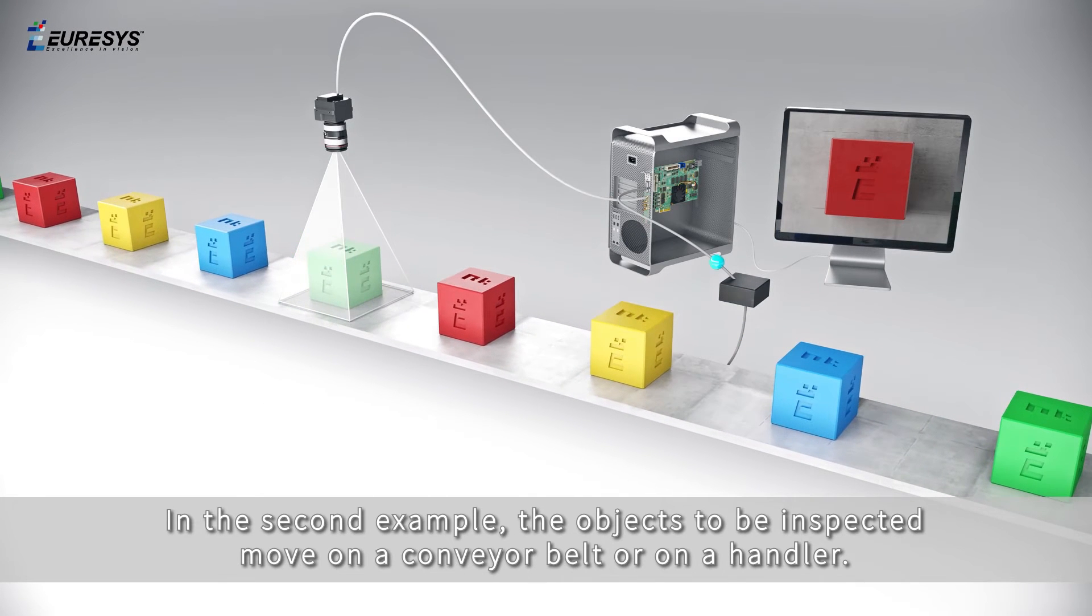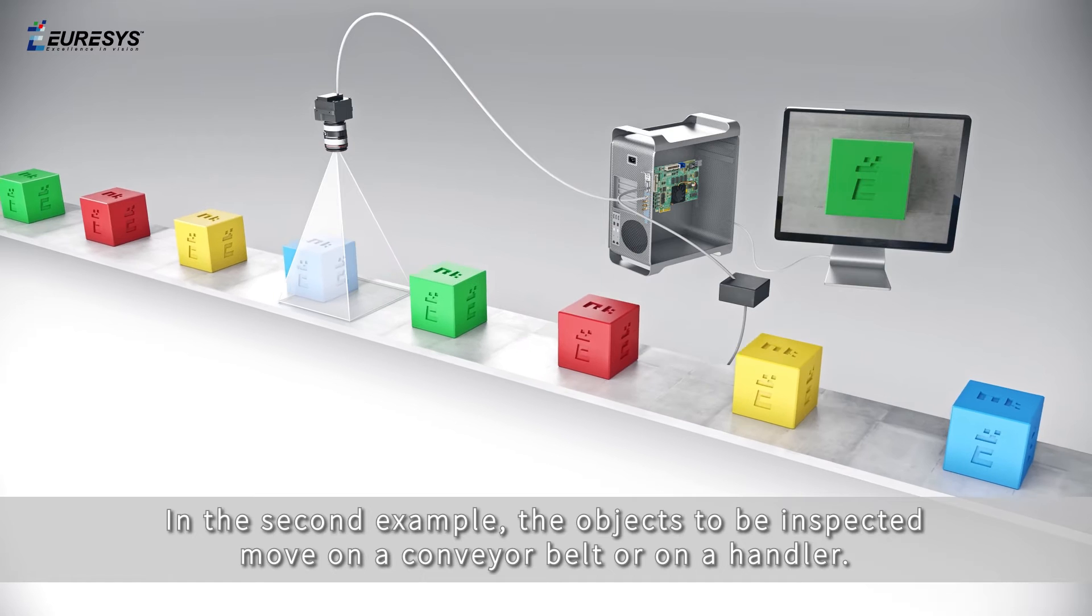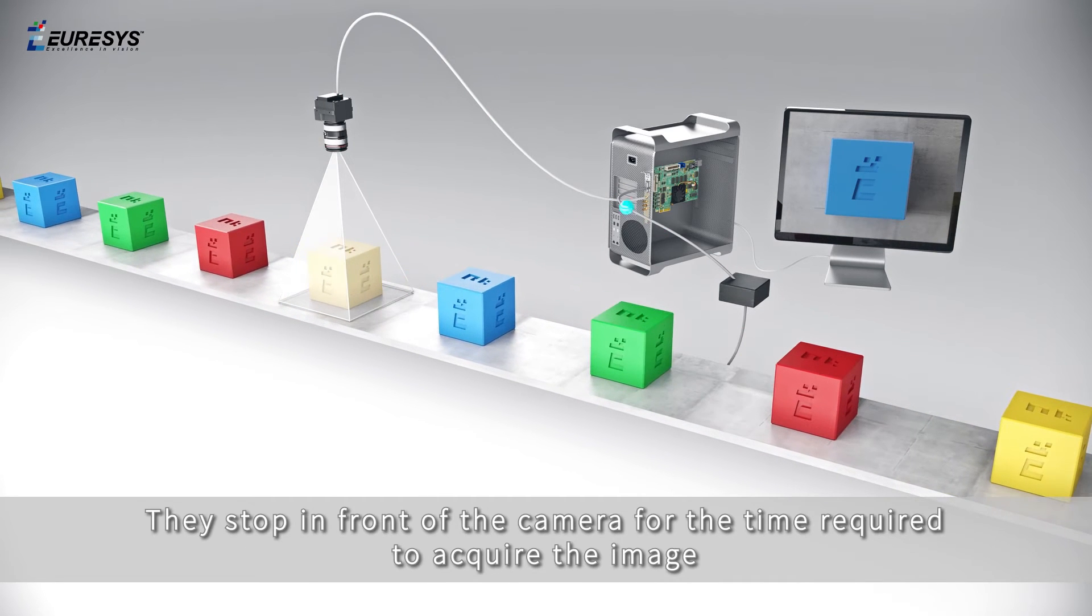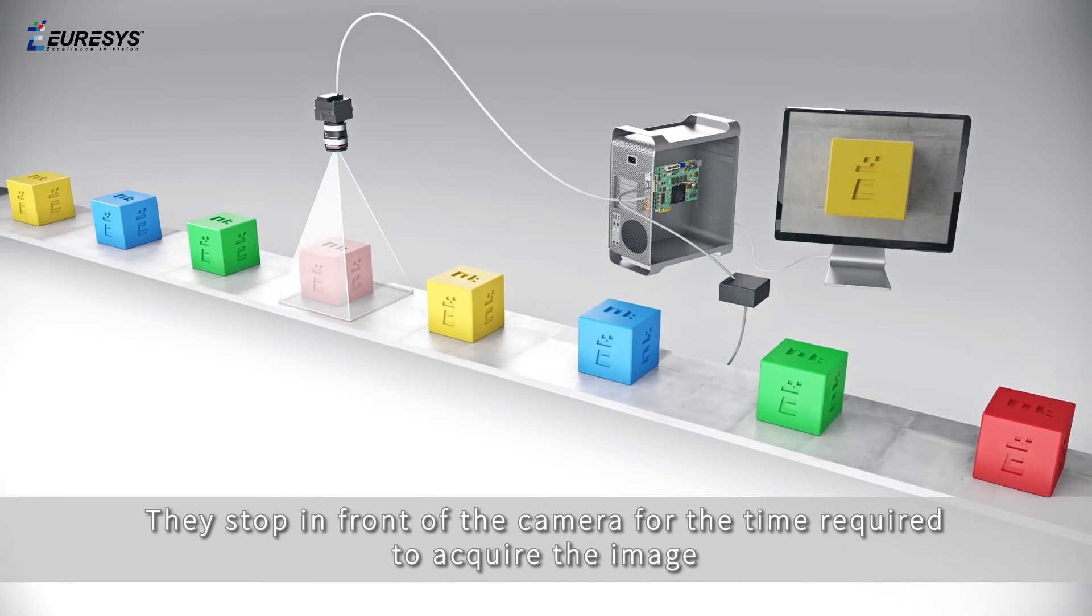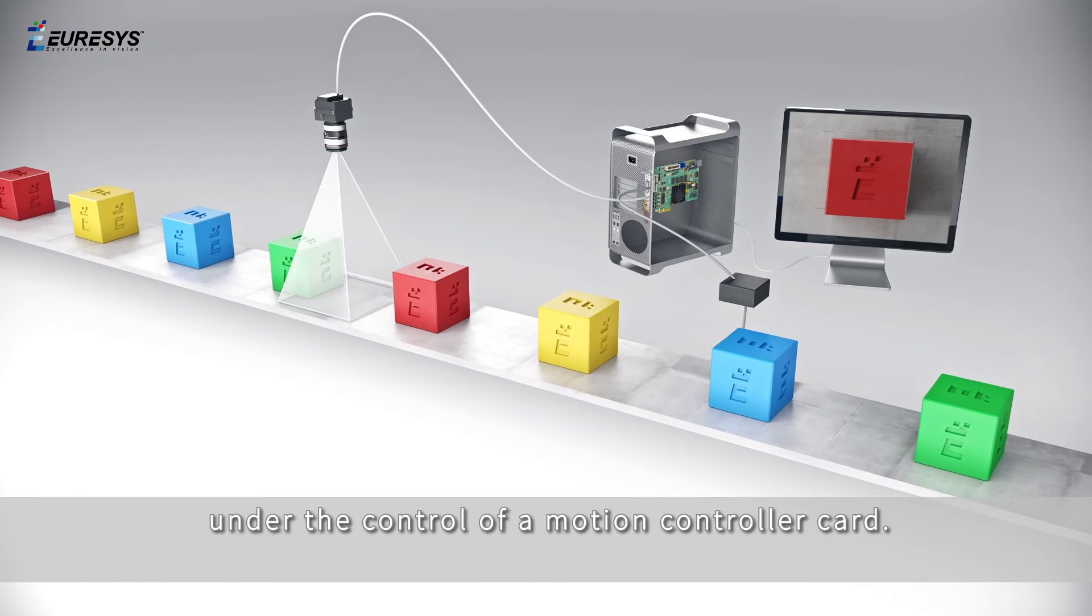In the second example, the objects to be inspected move on a conveyor belt or on a handler. They stop in front of the camera for the time required to acquire the image under the control of a motion controller card.